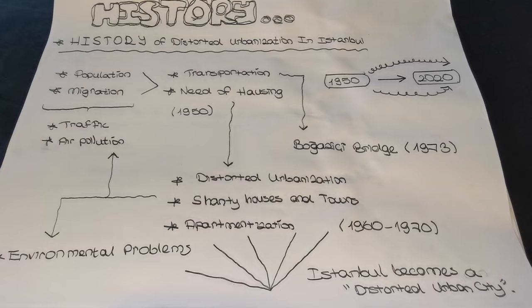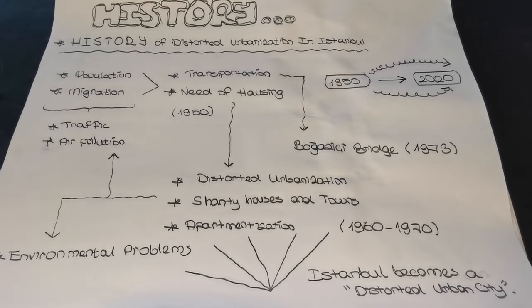However, development activities also increased. The number of shanty houses grew further, and Istanbul became a distorted urban city. This problem has continued to the present day, and distorted urbanization has become a big problem in Istanbul.